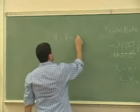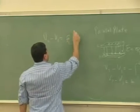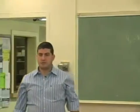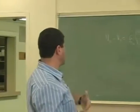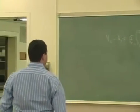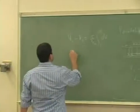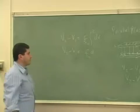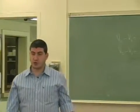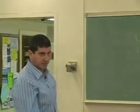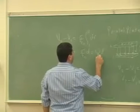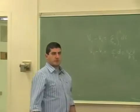The two negatives cancel and you get a positive. E is constant so it comes out of the integral, and the integral of dr is d. Sigma is equal to the charge per area on the plates — the surface charge density — so Q over A gives us the potential difference.